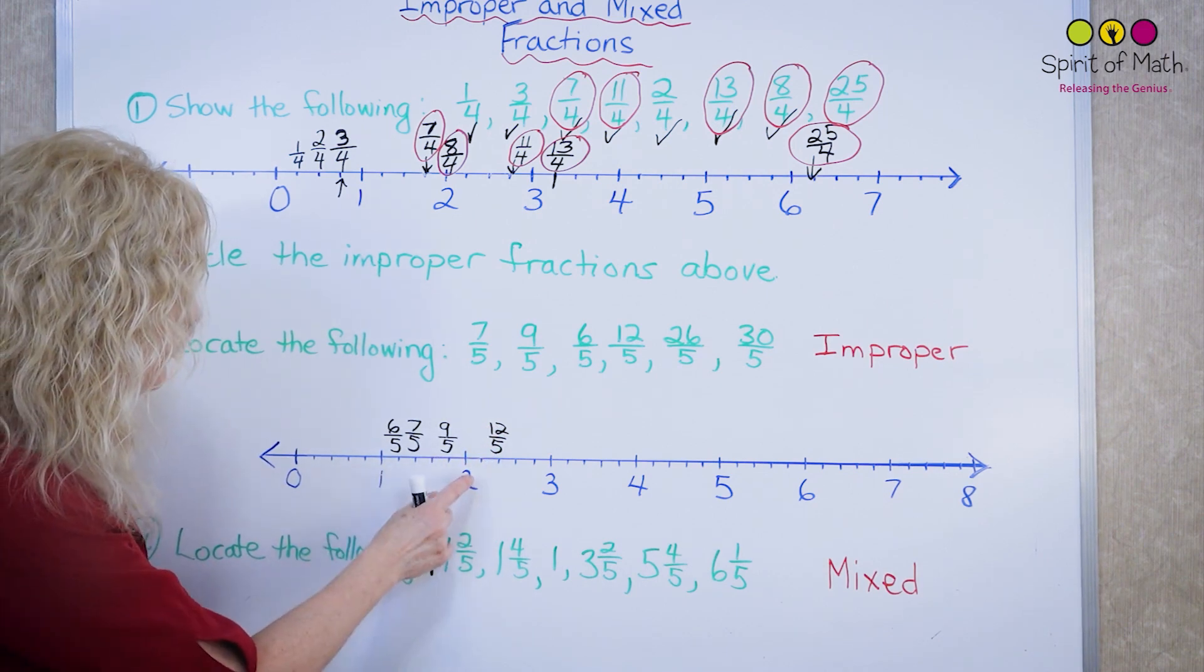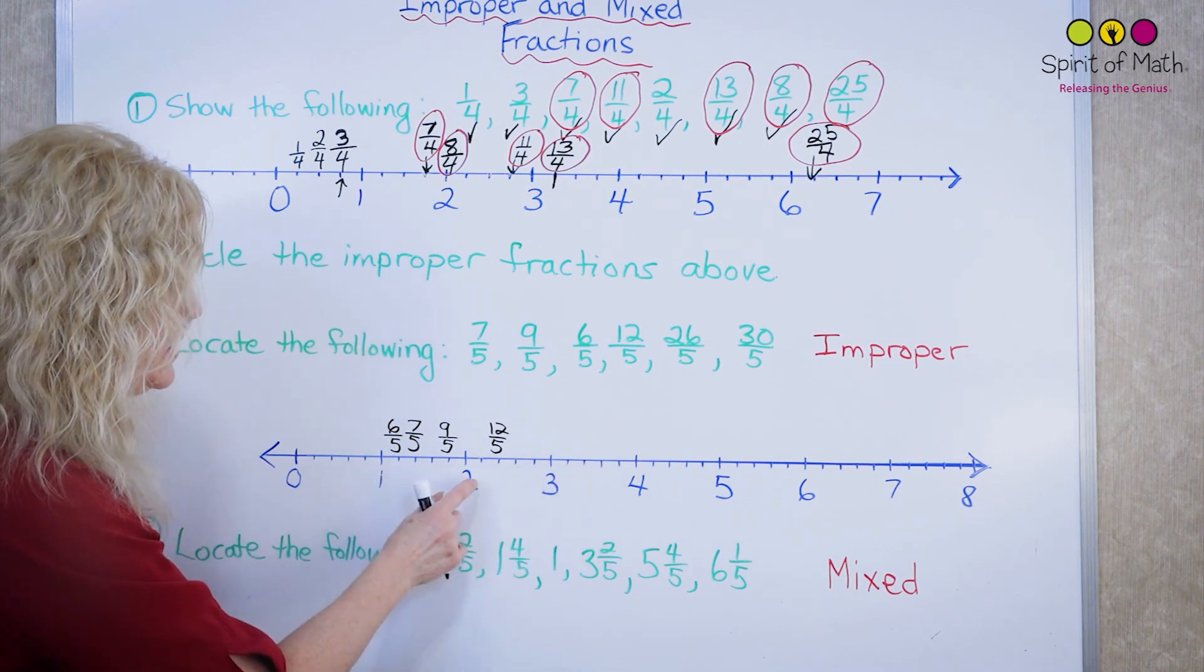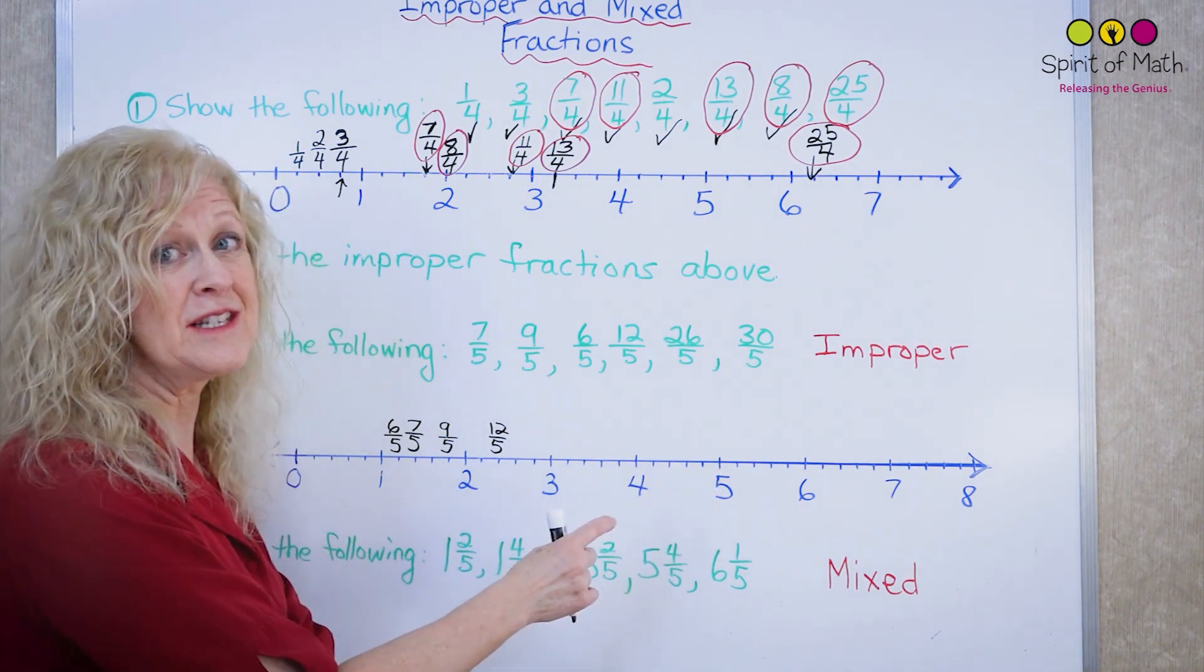Because every time you get here is five fifths, another five fifths, another five fifths. So five, ten, fifteen fifths, twenty fifths, twenty-five fifths.